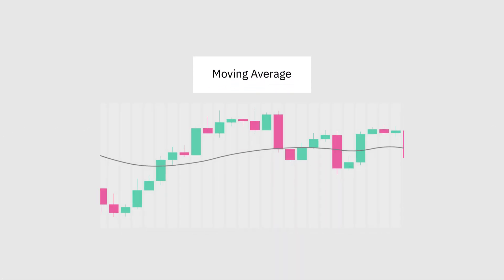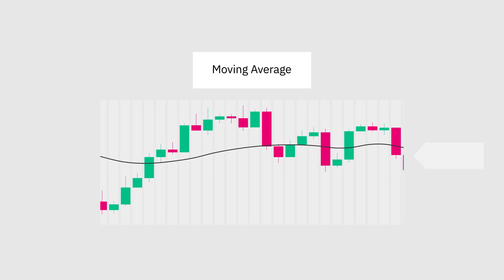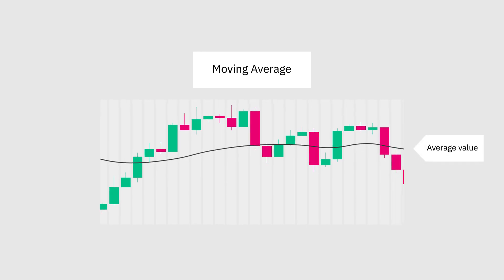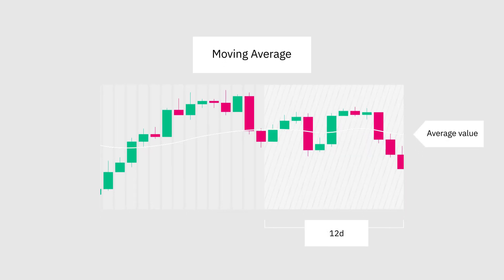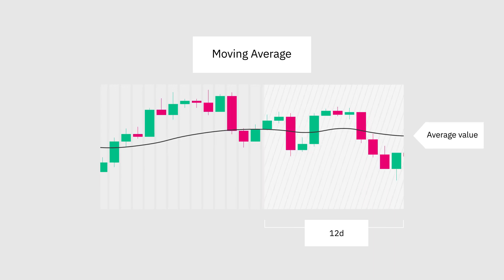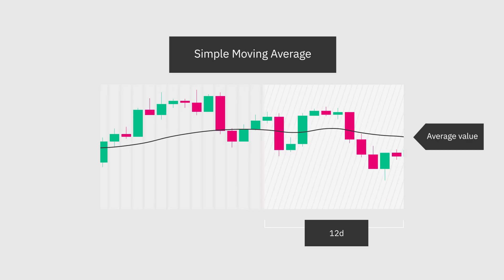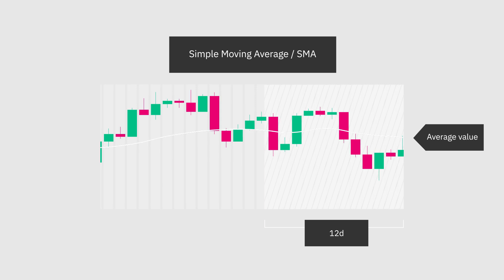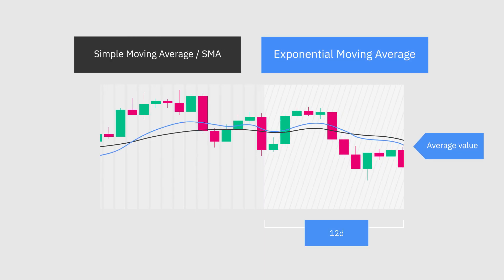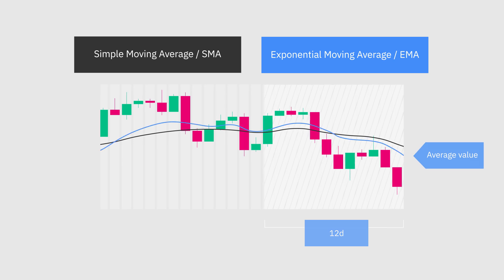A moving average is simply a line that represents the average value of previous data during a predefined period, and can be divided into two different types: Simple Moving Averages, also known as an SMA, and Exponential Moving Averages, also known as an EMA.